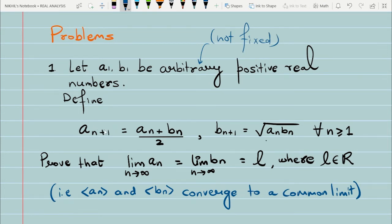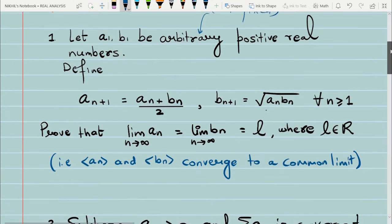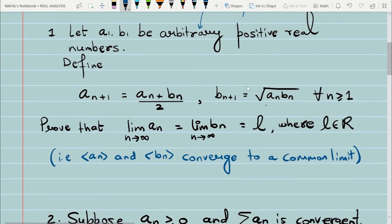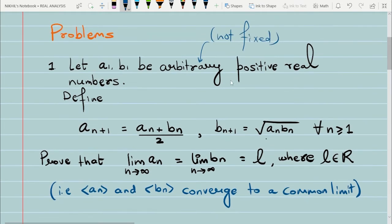Then you define two sequences An and Bn as follows. The terms of the sequences are defined in terms of the other sequence. A(n+1) is defined as (An + Bn)/2, and B(n+1) is defined as the square root of An times Bn. This holds for every n greater than or equal to one.